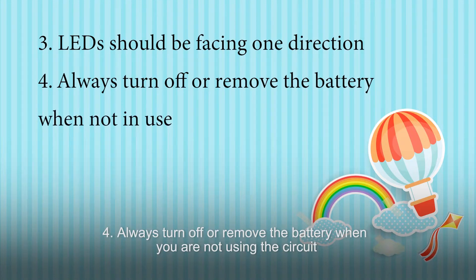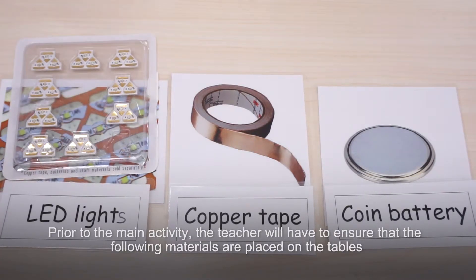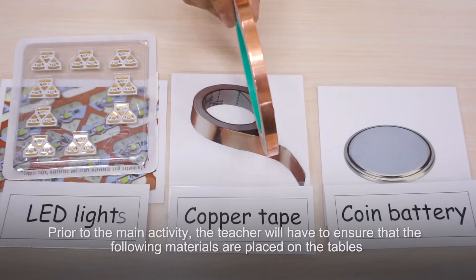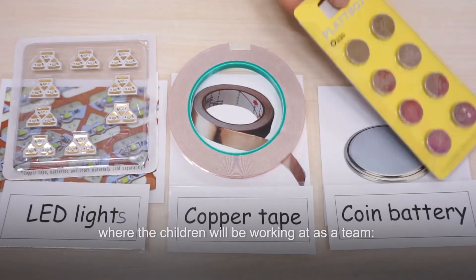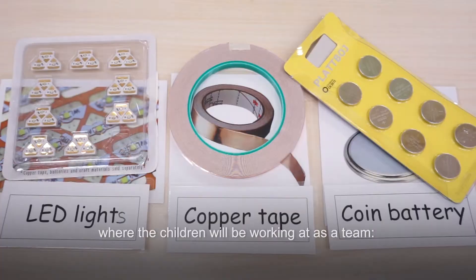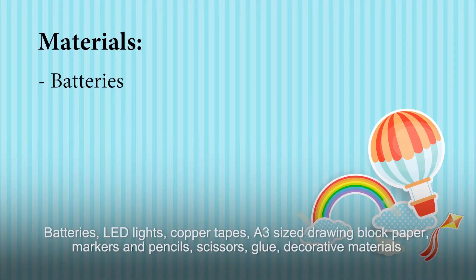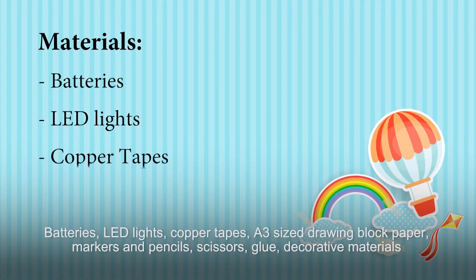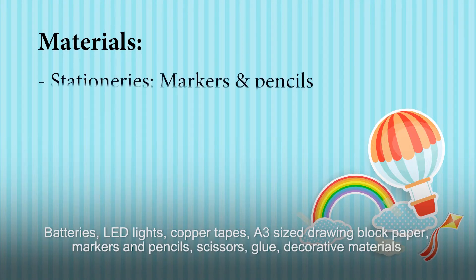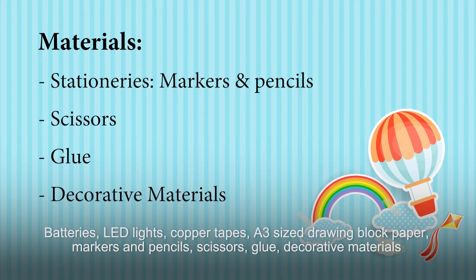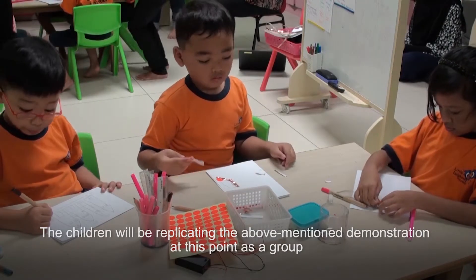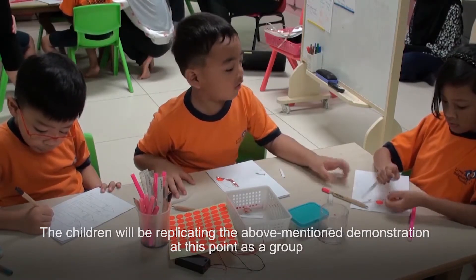Always turn off or remove the battery when you are not using the circuit. Prior to the main activity, the teacher will have to ensure that the following materials are placed on the tables where the children will be working as a team: batteries, LED lights, copper tapes, A3-sized drawing block paper, markers and pencils, scissors, glue, and decorative materials. The children will be replicating the above-mentioned demonstration at this point as a group.